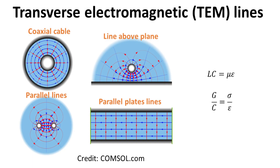There are many other geometrical designs of transmission lines that admit TEM modes as shown here. A unique property of all TEM transmission lines is that their line parameters can be related to the permittivity epsilon and permeability mu of the space that the fields permeate. The product of L and C equals the product of epsilon and mu, and the ratio of G and C equals the ratio of conductivity sigma and epsilon.